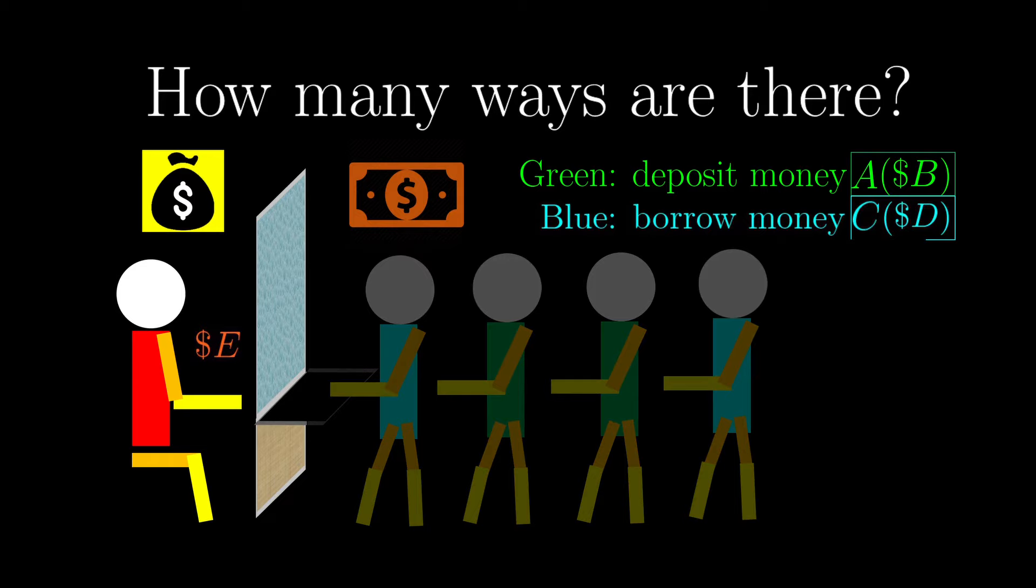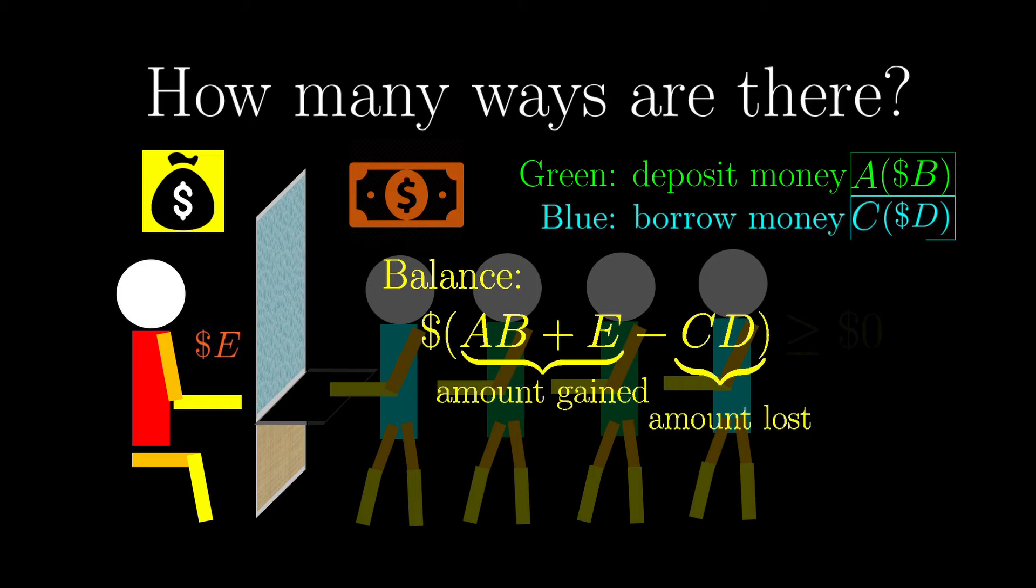There is something to note. The amount of money that the bank has after all those transactions is independent of the arrangement of the customers, and the balance is given by AB plus E minus CD, where AB plus E is the amount gained, and CD is the amount lost.